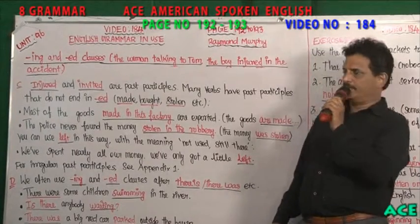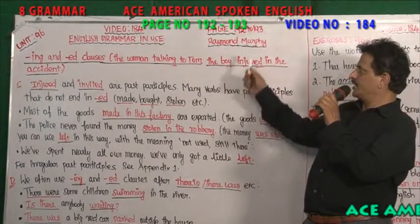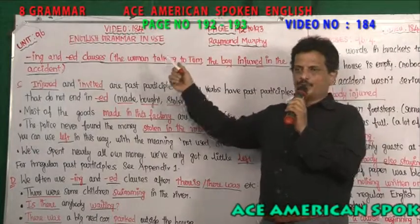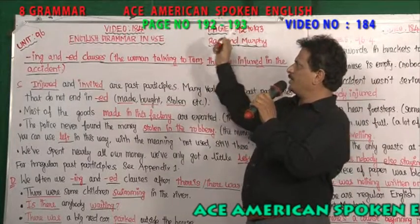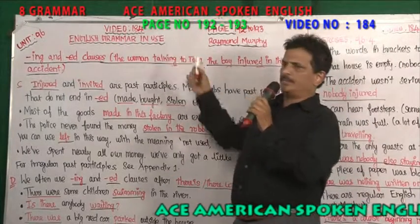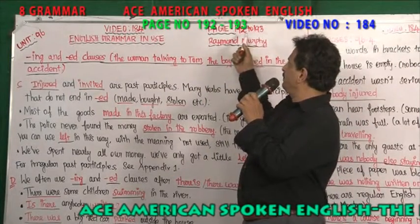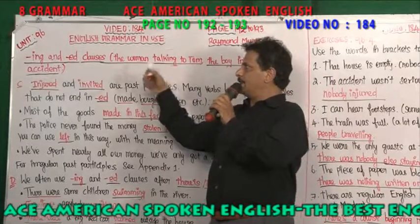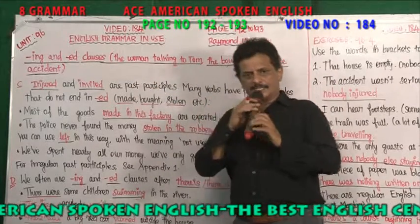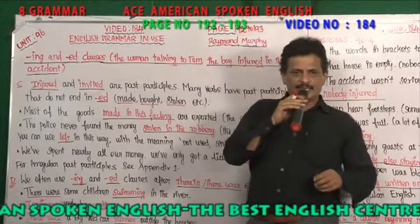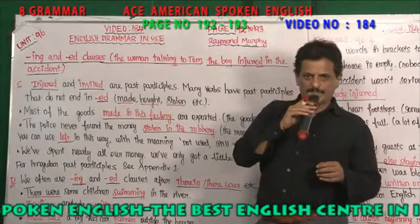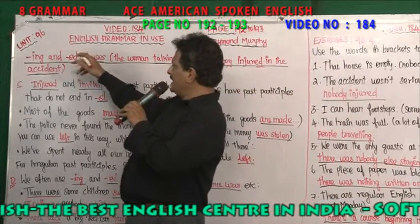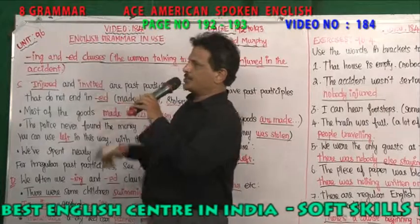Friends, welcome to AS American English Center. Take your Raymond Murphy's English Grammar. We have come here to video number 184. It is on page number 192 to 193, unit 96. It is the Cambridge University Press. What you are going to see is ING and ED clauses.